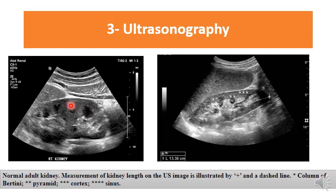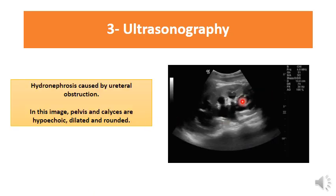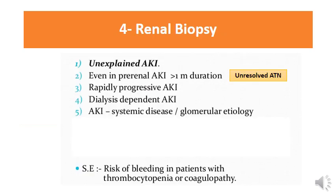On renal ultrasound, normal kidneys show little renal pelvis. In obstruction, the pelvis and calyces appear dilated and hypoechoic — dark fluid-filled spaces indicating hydronephrosis from ureteral obstruction. Renal ultrasound is essential to detect this and assess kidney size.